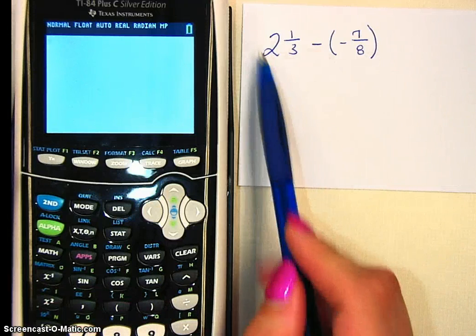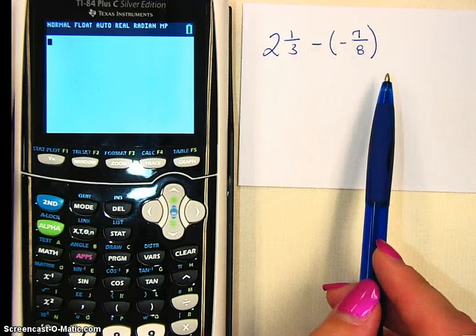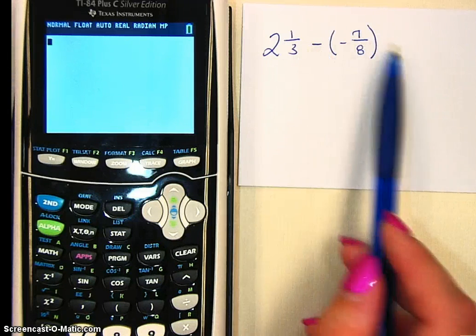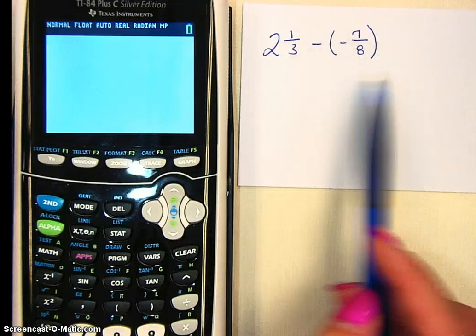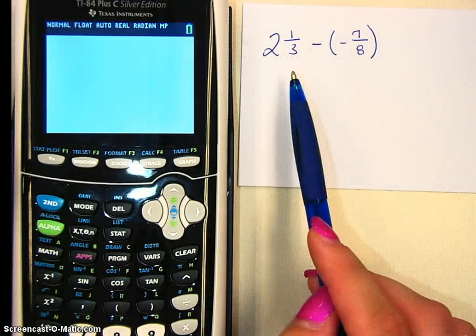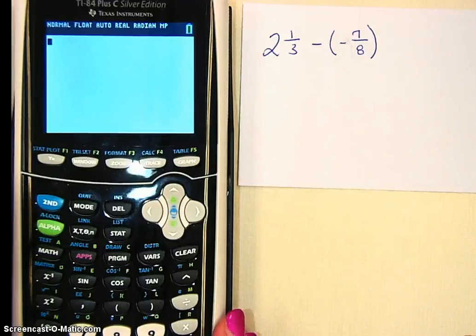To begin with, I have a problem: 2 and 1/3 minus negative 7/8. You could do this by hand, find the common denominator, subtract them. It can be a little long and tedious. So instead, we're going to use the calculator. Use our tools wisely.